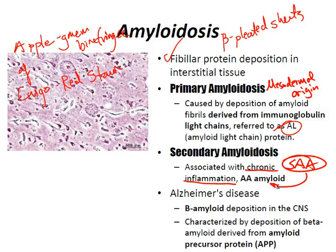SAA is a normal inflammatory protein produced by the body. However, in chronic inflammatory states, overproduction causes it to be deposited in tissues. Chronic tissue destruction leads to increased serum amyloid-associated proteins and involves parenchymal organs such as the kidney causing nephrotic syndrome, adrenal glands, pancreas, lymph nodes, and spleen.